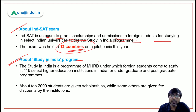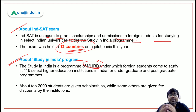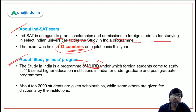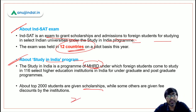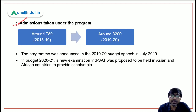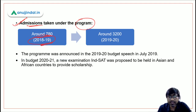The Study in India program is a Ministry of HRD program under which foreign students can come to India to study in selected higher education institutions. About the top 2,000 students, scholarships are given; the rest get fee discounts by the institutions to attract them, thereby increasing the global value of our institutions. Under this program, admissions were around 780 in 2018-19, which increased to 3,200 in 2019-20.